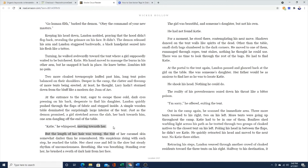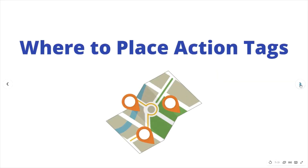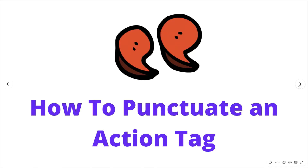Another example: 'Katie,' he whispered, moving toward her — 'moving toward her' is the action tag. There's also the question of where to place your action tags. You can place them before the dialogue, in the middle of the dialogue, and after the dialogue. Depending on the placement, it's going to change certain characteristics of the sentence and the reader's experience. You can really learn so much about a character from simple gestures and a little bit of action.